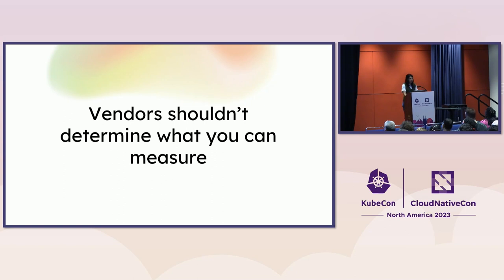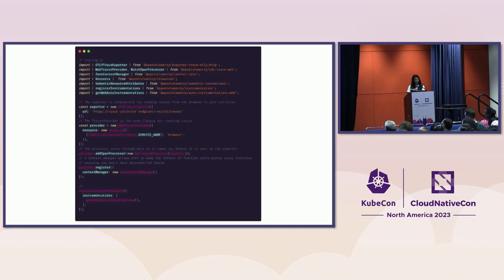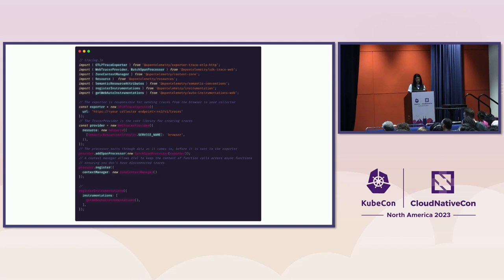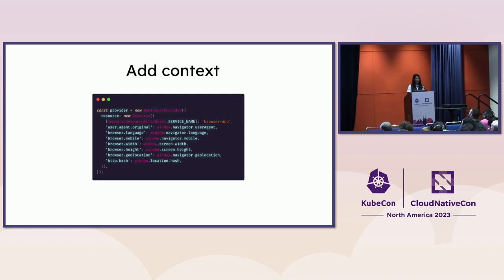Getting started with OpenTelemetry: you install some packages, write the setup code — I have references at the end along with an example GitHub project. It is as simple as installing some packages and adding a little bit of boilerplate setup code, and you're ready to start sending data. Adding context looks like this — things like adding the user agent, browser language, user ID, session ID — these are added on your resource attributes that get sent with every single span to OpenTelemetry to allow you to do better intersectional analysis.